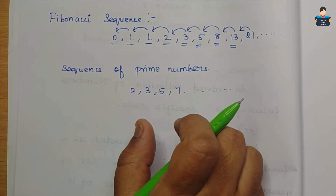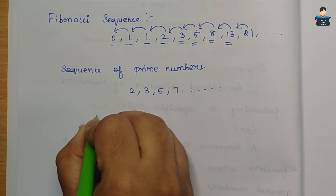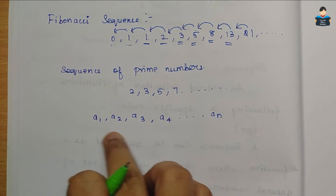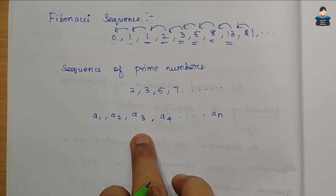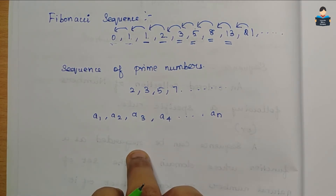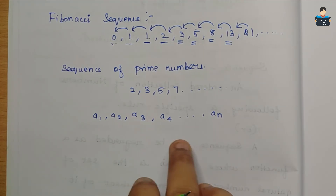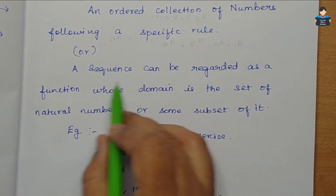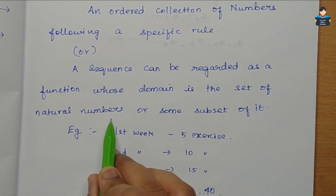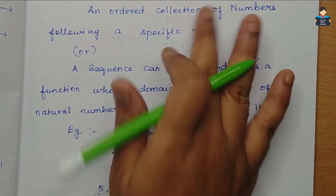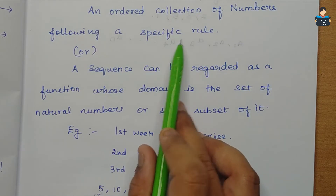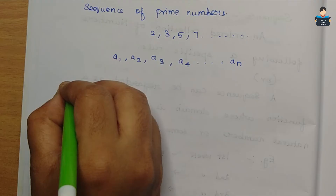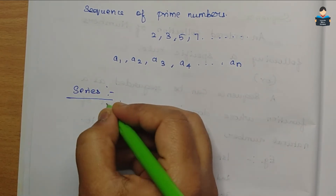So how do we represent a sequence? We represent it as A1, A2, A3, A4, up to An. A sequence is regarded as a function whose domain is the set of natural numbers or some subset of it — that is, an ordered collection of numbers following a specific rule.